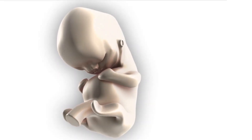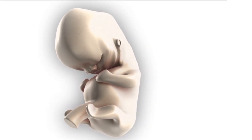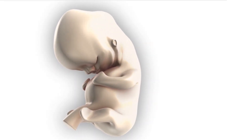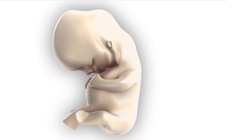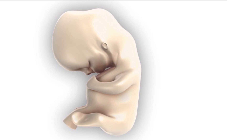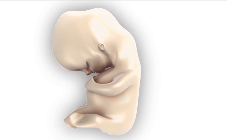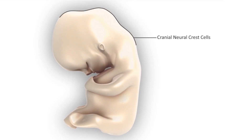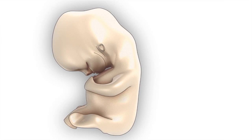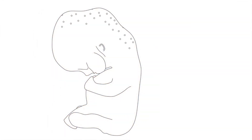The development of the head, face and neck starts around the 4th week of the fetus from specialized structures known as the cranial neural crest cells. These cranial neural crest cells contribute to the majority of the structures of the head, face and neck.